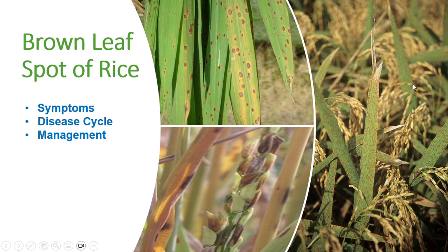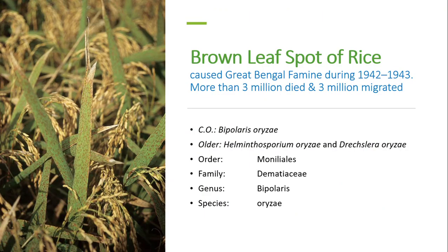Today we will talk about brown leaf spot of rice, which is a very important disease of rice that is spreading in recent years all over Pakistan and India. Brown spot of rice is also called the death disease because the Bengal famine came in 1922 and 1923, during which 3 million people were dead and 3 million people migrated. That is why this disease is called the death disease.